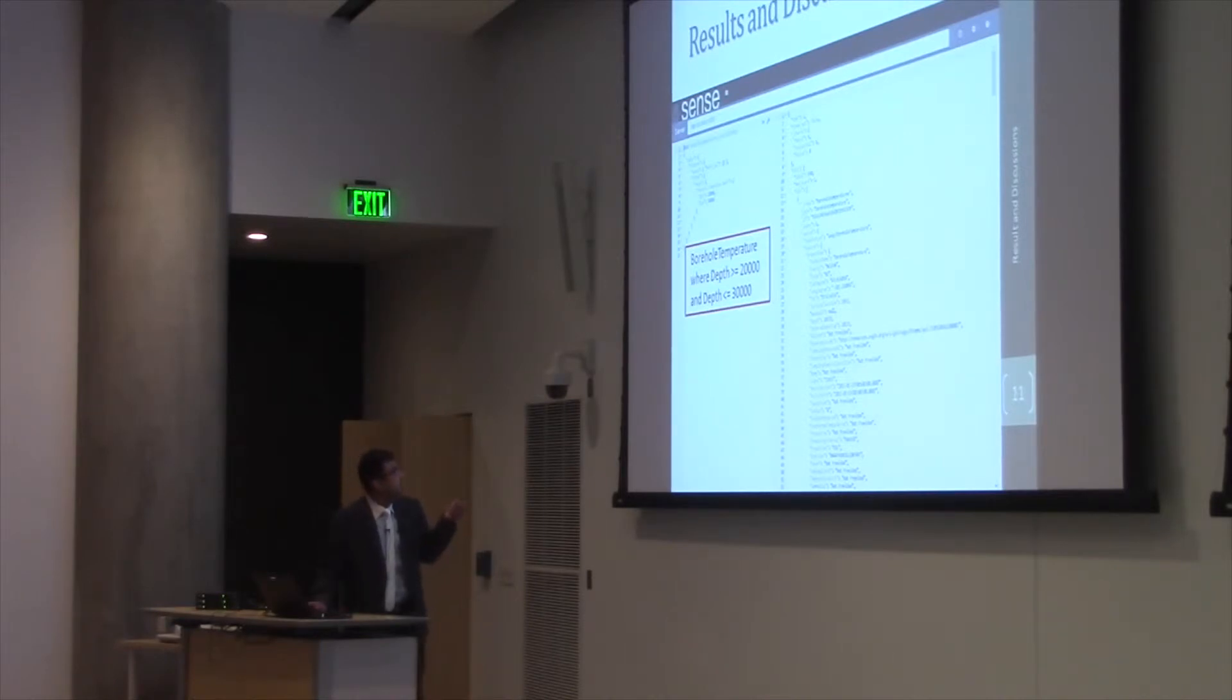Then I query the database to give me the borehole temperatures where depth ranges between 20,000 to 30,000, and it returns me 580 records. From here, I would like to demonstrate that web mapping application.